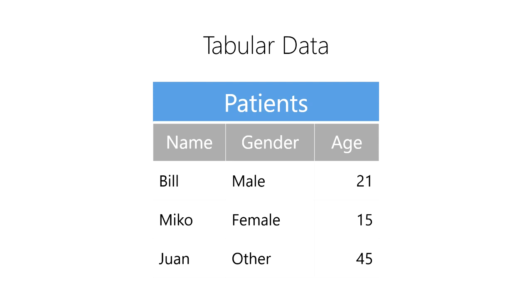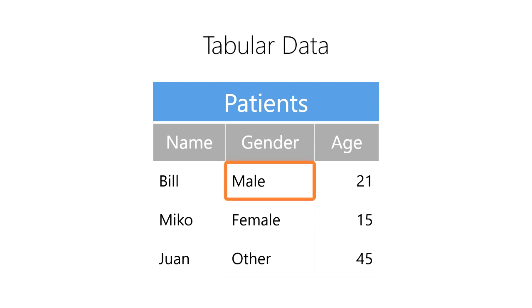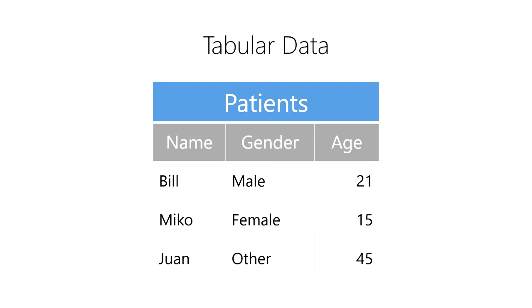However, each row contains elements of various data types. For example, the name Bill is a character string, the gender male is an enumeration, and the age 21 is an integer. As we can see, each column contains only a single data type; however, each row can contain multiple data types.